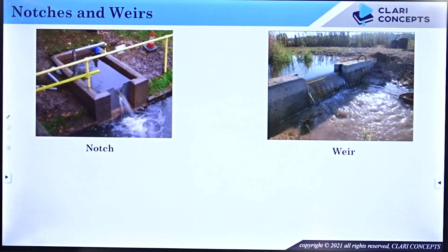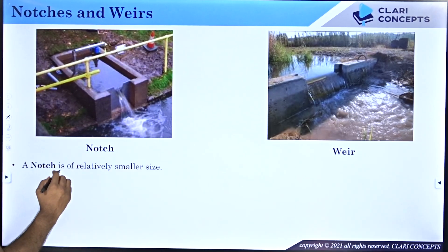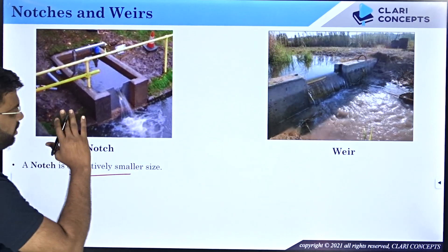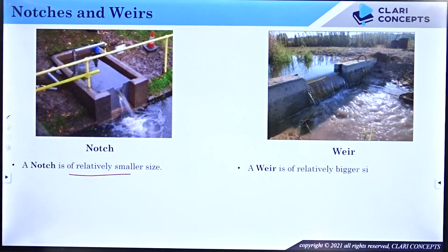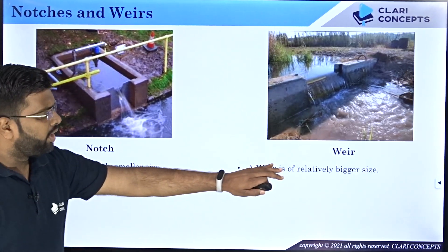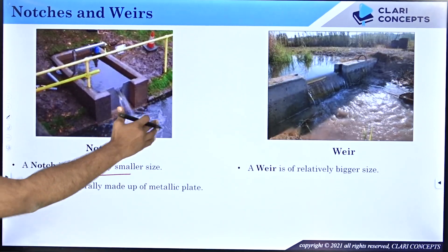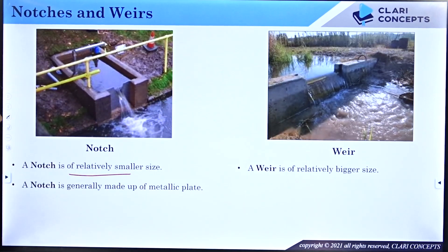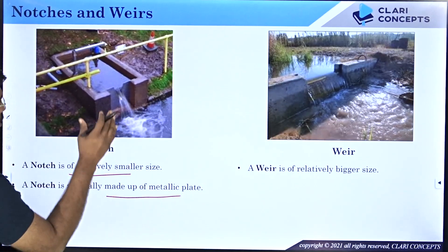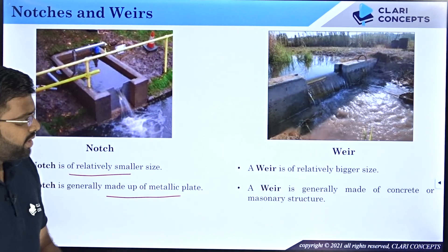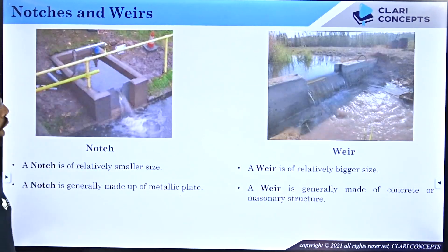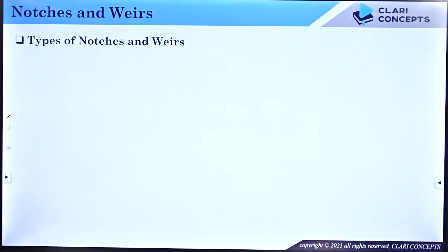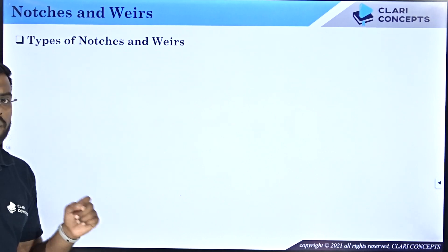Comparing the two: a notch is relatively smaller in size and is generally made of a metallic plate, while a weir is relatively bigger and is made of concrete or masonry structure. The weir is used because it measures flow rate in large water bodies.